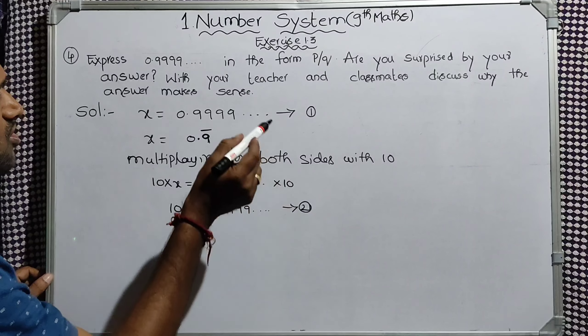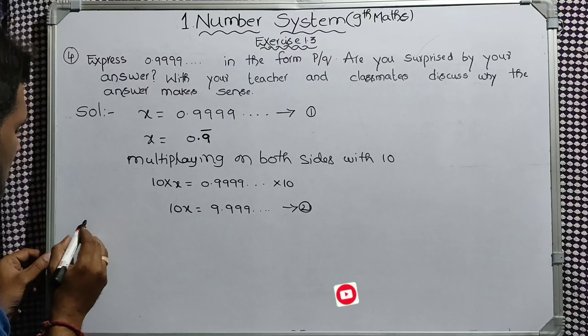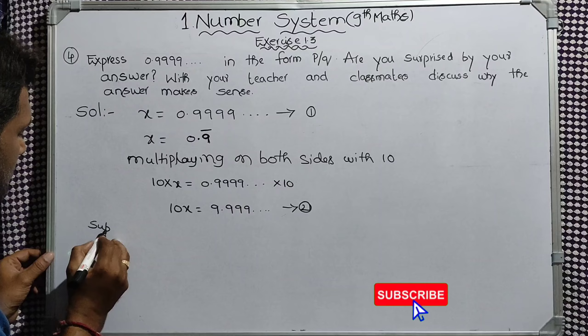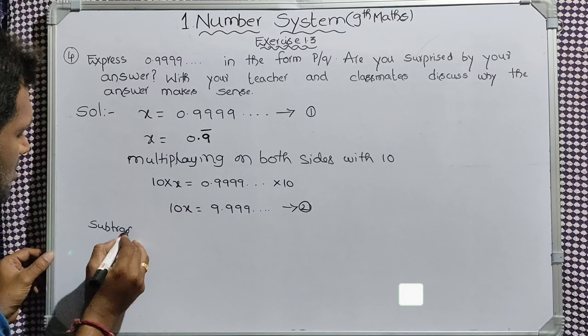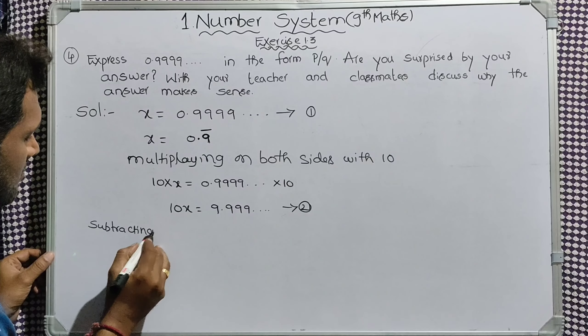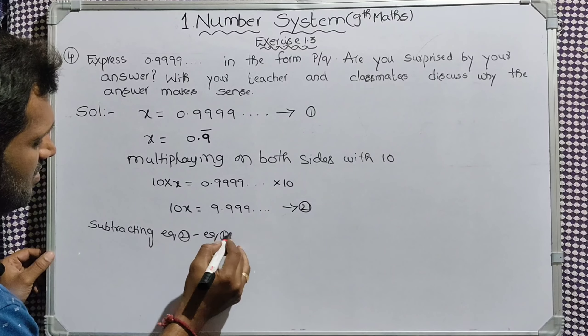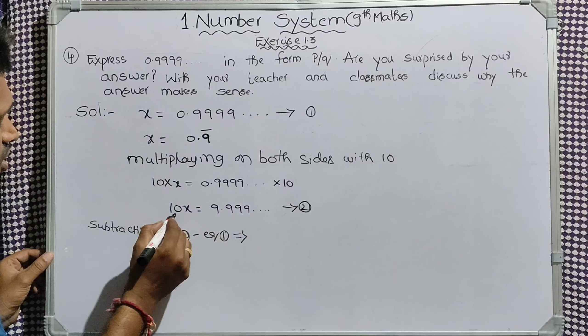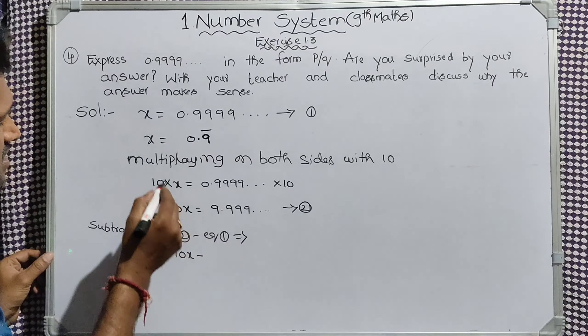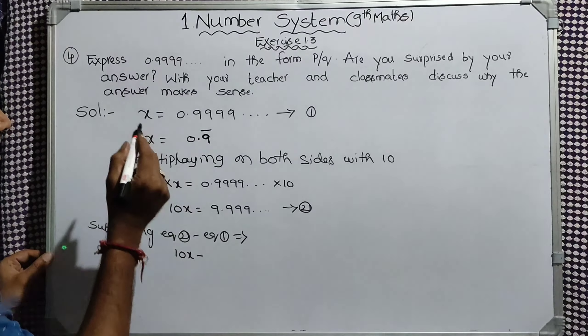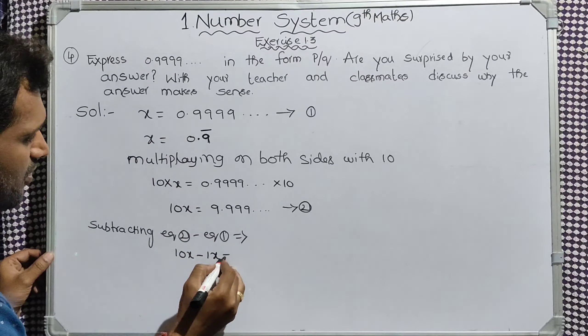Next, we have equation 2, equation 1. Subtracting. Equation 2 minus equation 1. That implies equation 2 LHS: 10x minus equation 1 LHS: 1x equal to